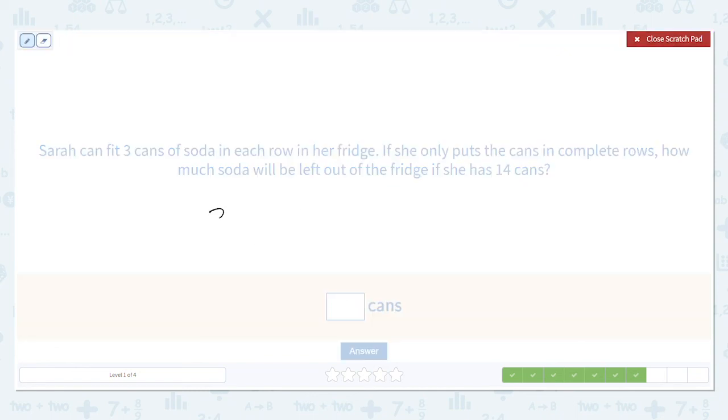In this case, three per row, 14 sodas. Three goes into 14 four times for 12 with a remainder of two.